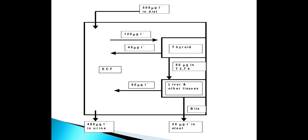The thyroid iodide is 95% accumulated in the thyroglobulin — that is the colloid — and 5% is in the cells. If you consume 500 micrograms in the diet, 120 is taken up by the thyroid and 40 is given out. Out of this 120, 80 forms T3 and T4 and gets metabolized in the liver, and the remaining 60 comes to the extracellular fluid. 20 micrograms is in the stool, so intake equals output.